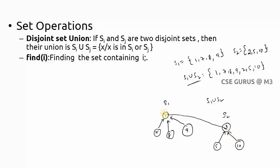In this union, previously the parent of 2 was minus one; now it becomes 1. This is the union operation. Find is nothing but finding the set containing a node — more specifically, finding the root node of a particular node. For example, find of 5 returns 1, and find of 8 also returns 1. Even for the root node itself, find of 1 returns 1.